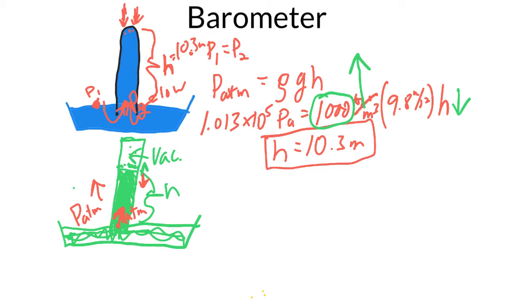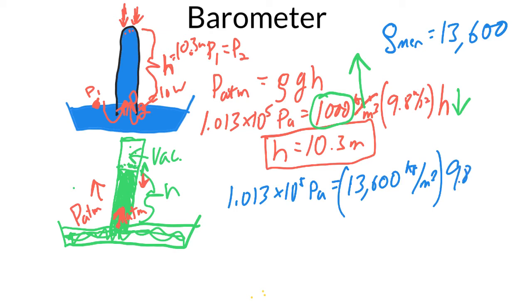So we just do the same kind of calculation. We'll just say okay one atmosphere, 1.013 × 10^5 pascals equals, again we're going to use ρ of mercury here. So I'm going to look this up, ρ of mercury is 13,600 kilograms per meter cubed and 9.8 and let's find the h. So this would be if it was nice at sea level 1.013, what would be the height of this? Well it turns out you get 0.760 meters.